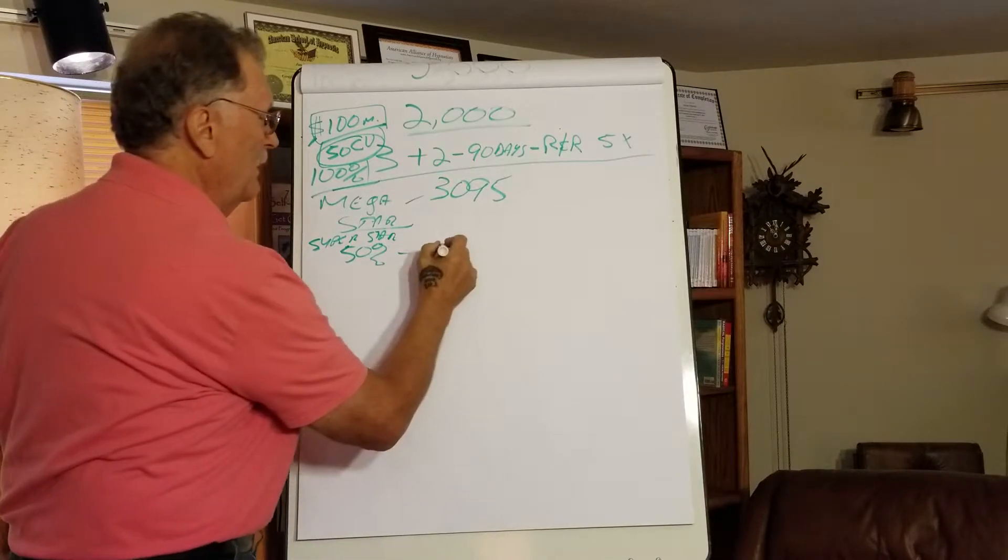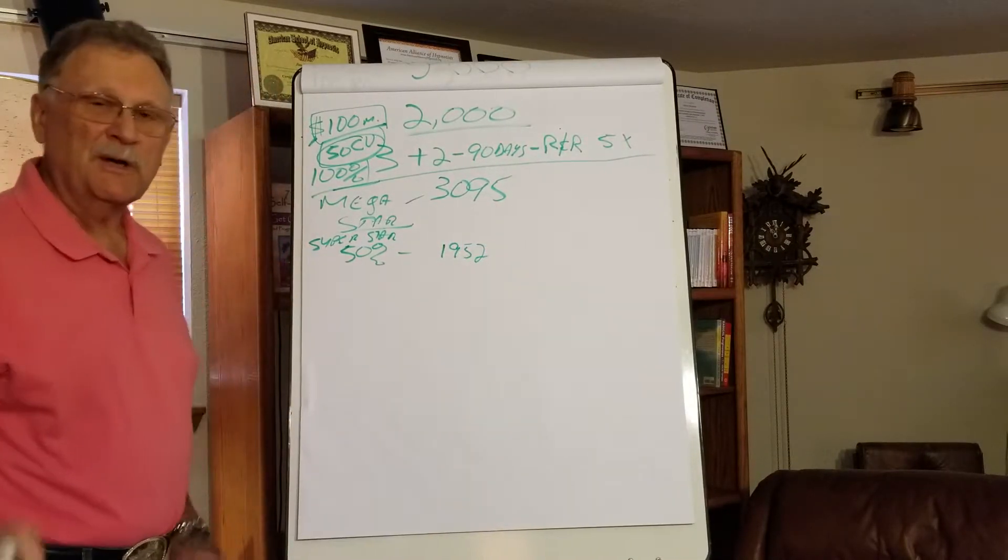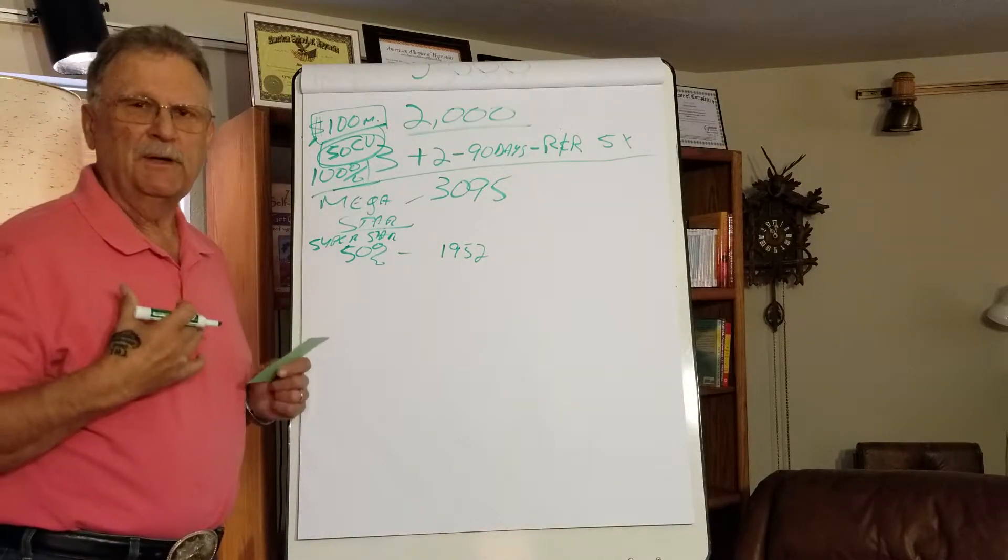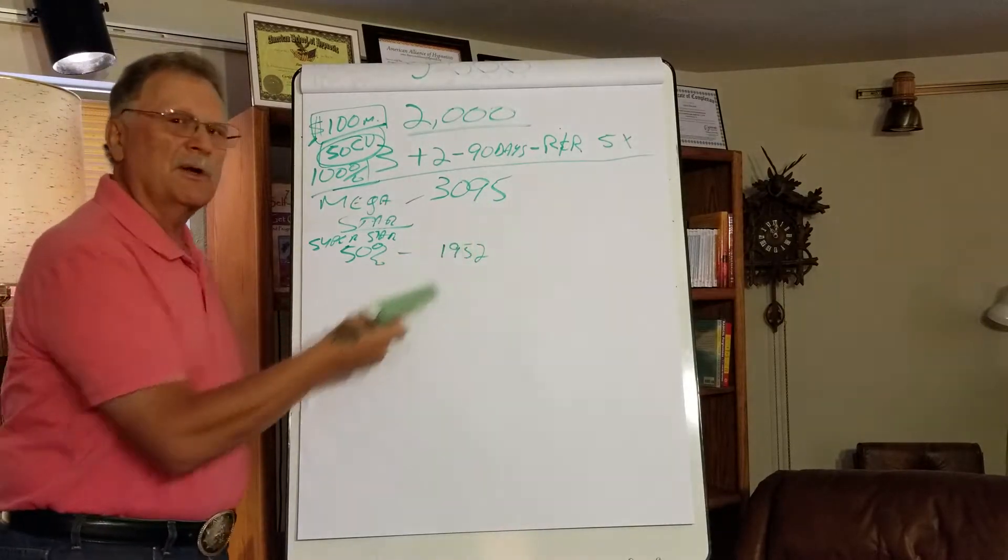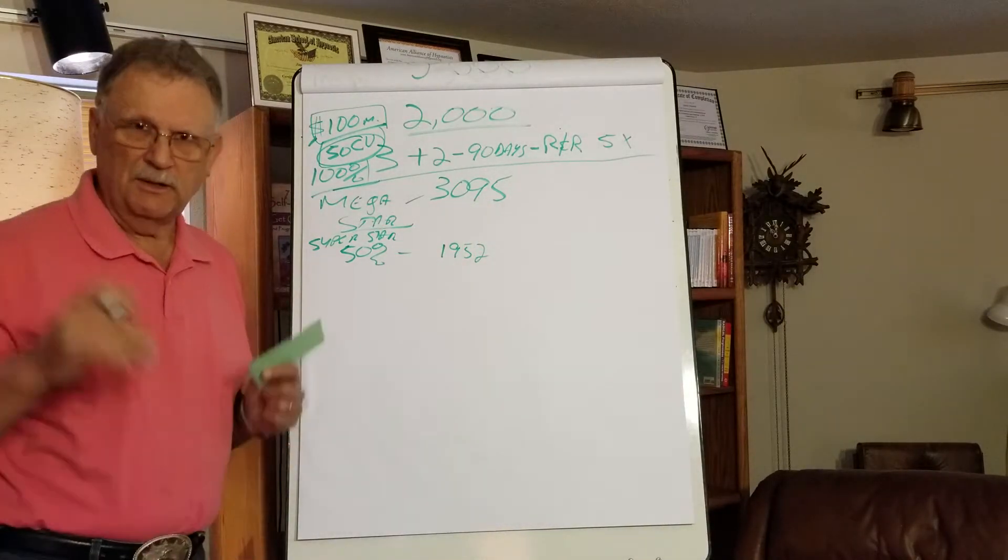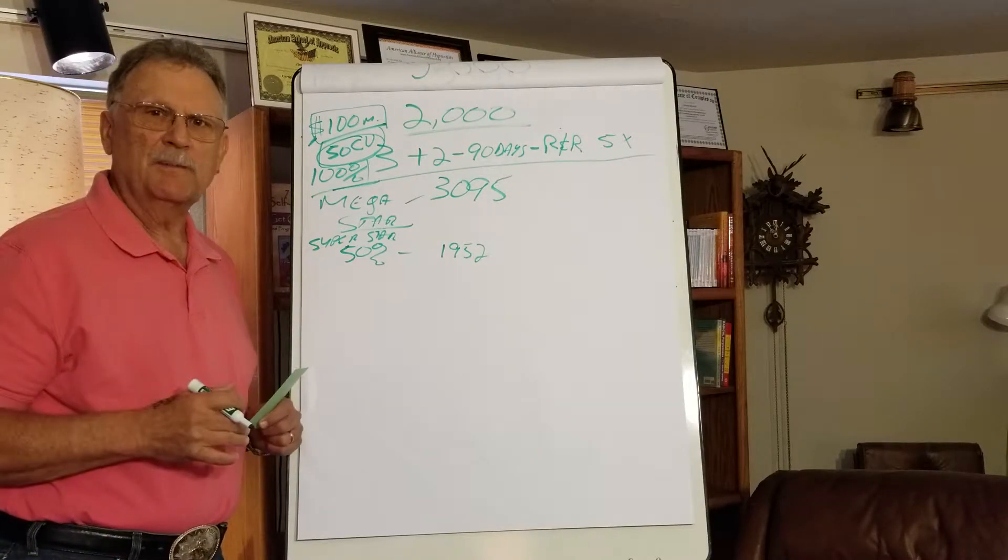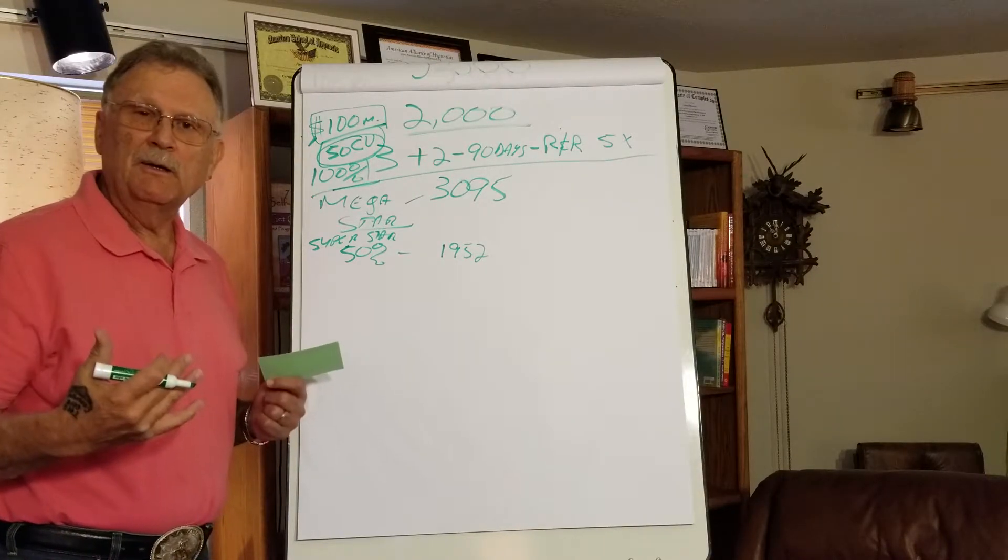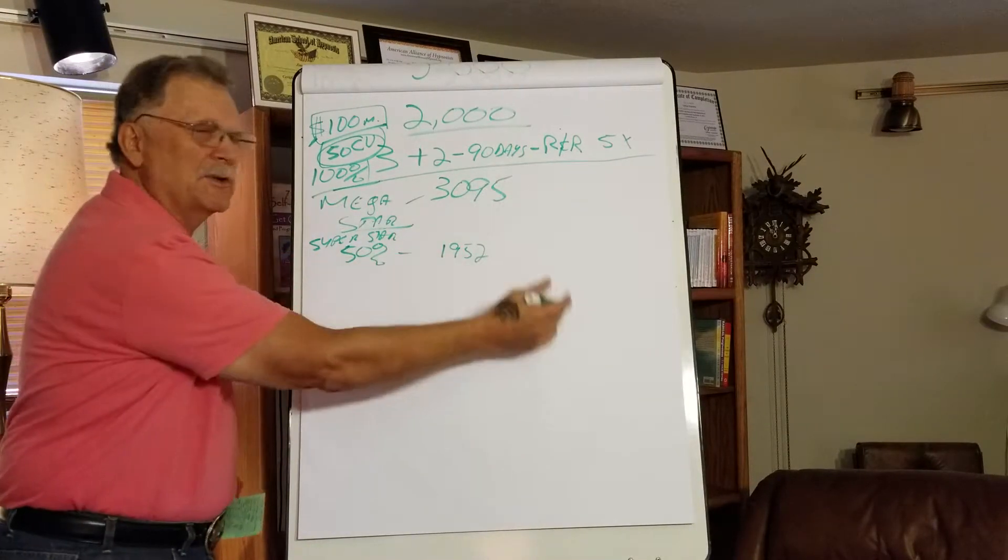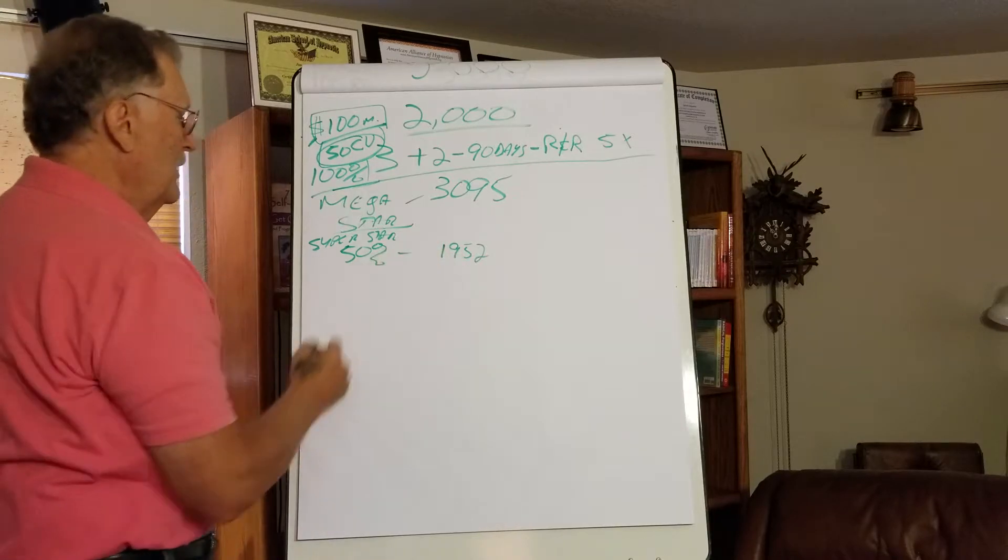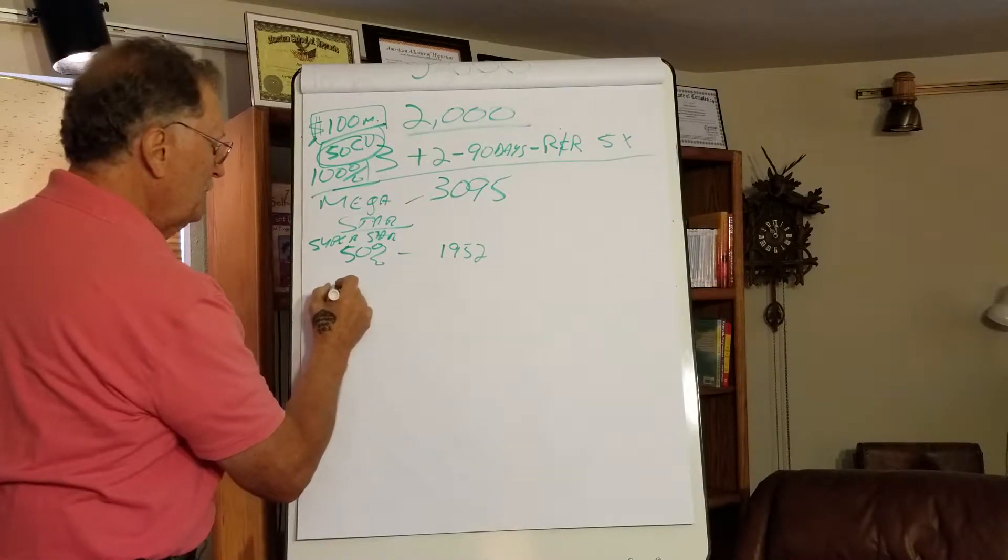And it means you're going to have 1,952 people in your organization. Now let me tell you this. Vicki and I have been in network marketing full-time since 1995. This is called a micro group in the big picture of things, so just I don't want you to think, oh wow, that's a lot of people. It is in the beginning, but as you go along, not so much. But we'll see what financially that does for you here in a minute.